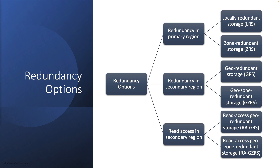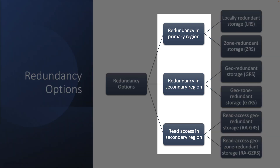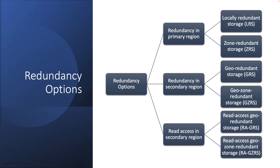By the very nature of redundancy, it will involve the primary region and in some cases the secondary region. Broadly, redundancy is divided into three categories: redundancy in the primary region, redundancy in the secondary region, and read access in the secondary region. You choose the redundancy as per your project need.